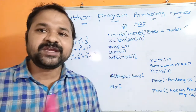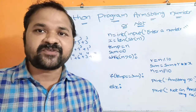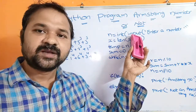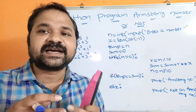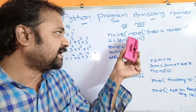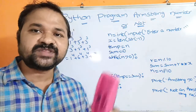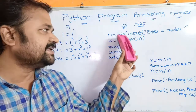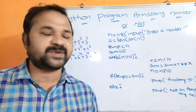Now let us see an example program. First we have to read a number from the keyboard using the input function. The problem with the input function is it returns a string, so we have to convert it to integer using the int function: n = int(input('Enter a number')).